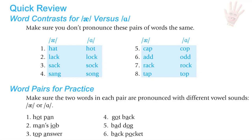Quick review — vowel contrasts for A and Ah: hat/hot, lack/lock, sack/sock, sang/song, cap/cop, add/odd, rack/rock, tap/top.